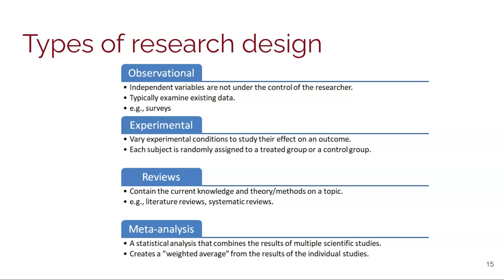Another type is a meta-analysis — an analysis that combines the results from multiple scientific studies. Rather than conducting individual experiments, you might collect the 100 research studies that analyze what you're interested in, and in a statistical way, using a kind of weighted average, compare and synthesize the results from several individual studies.